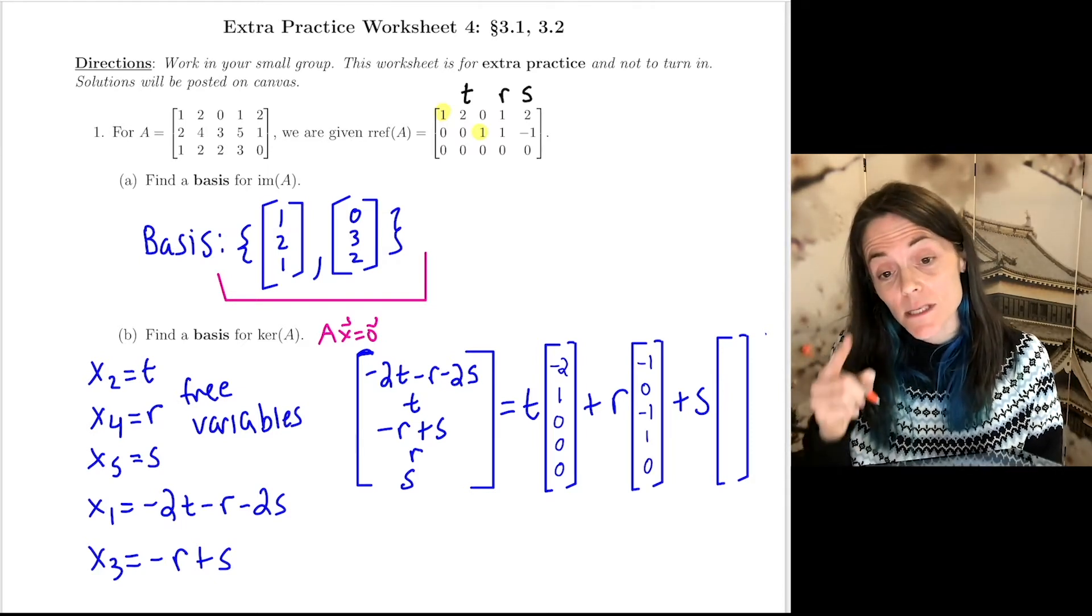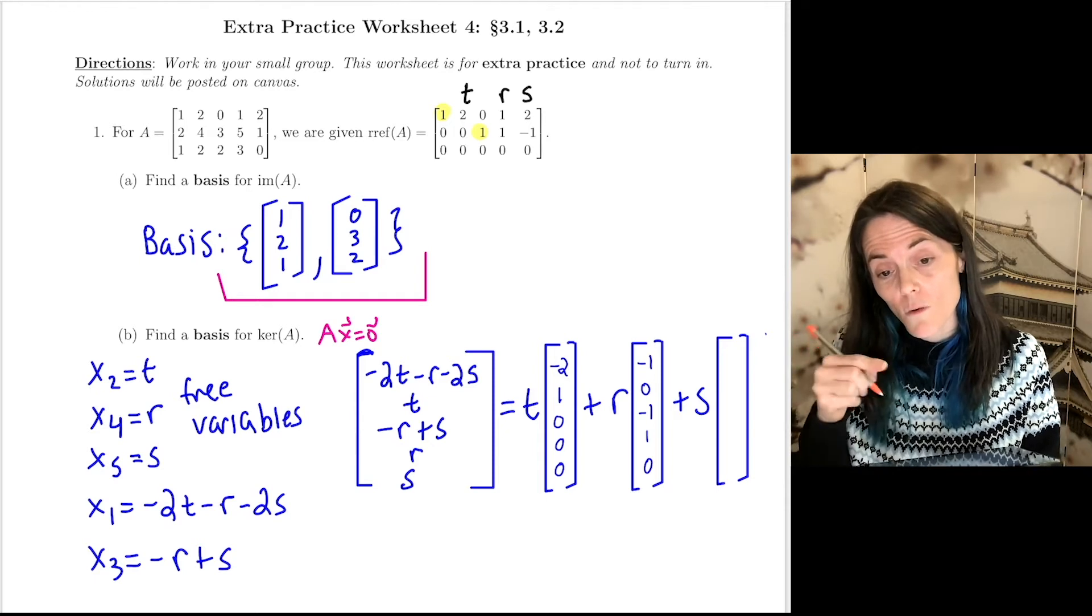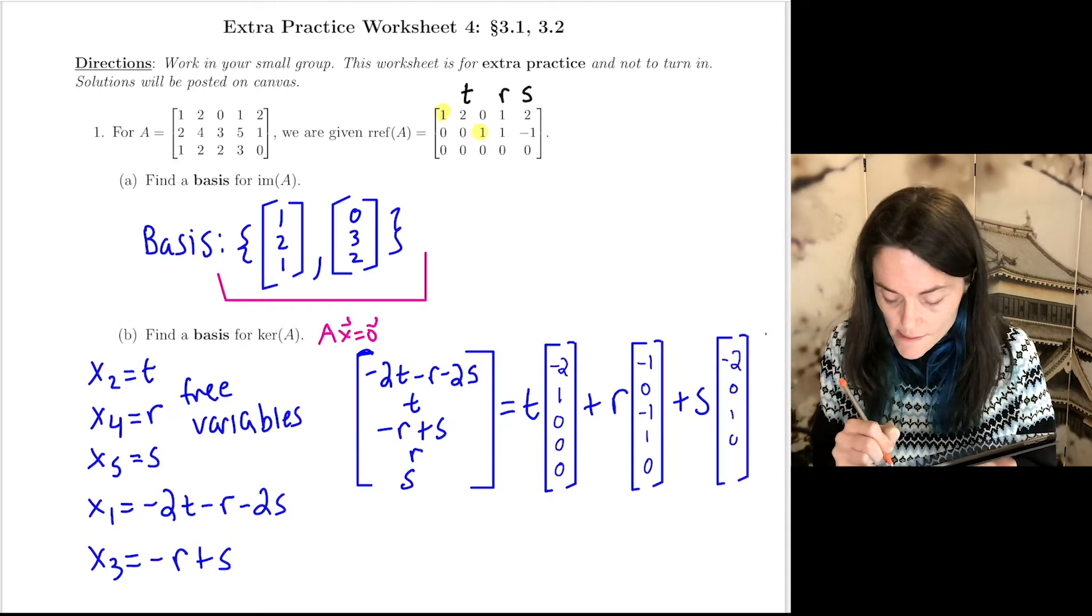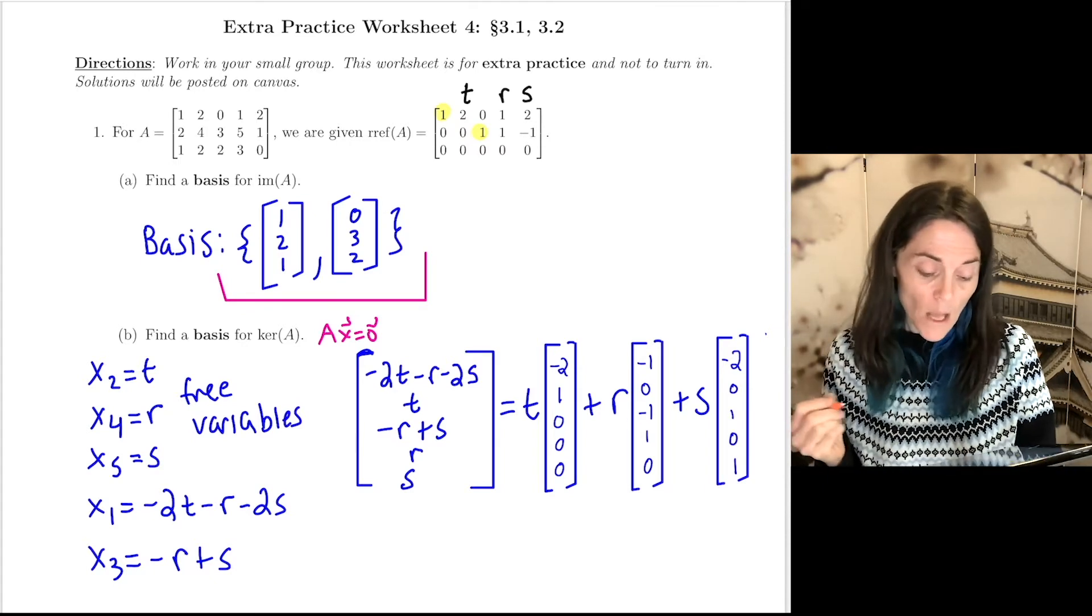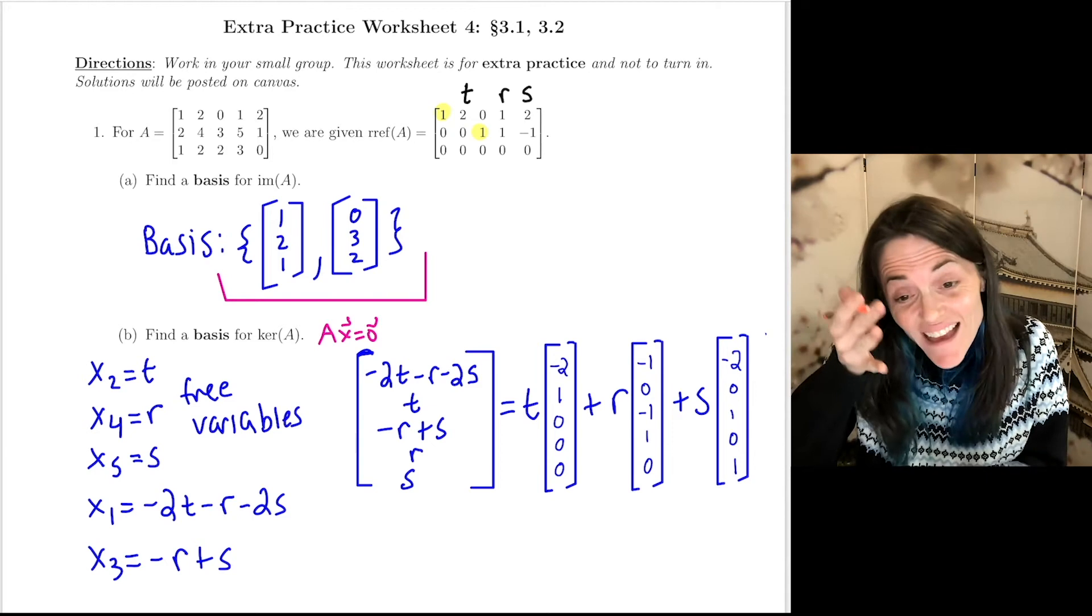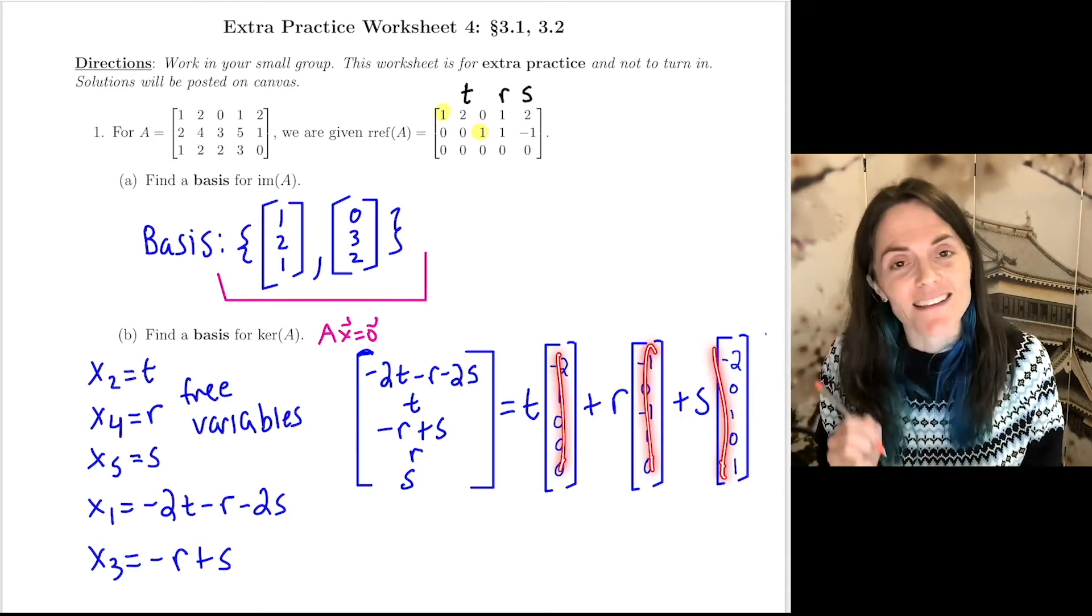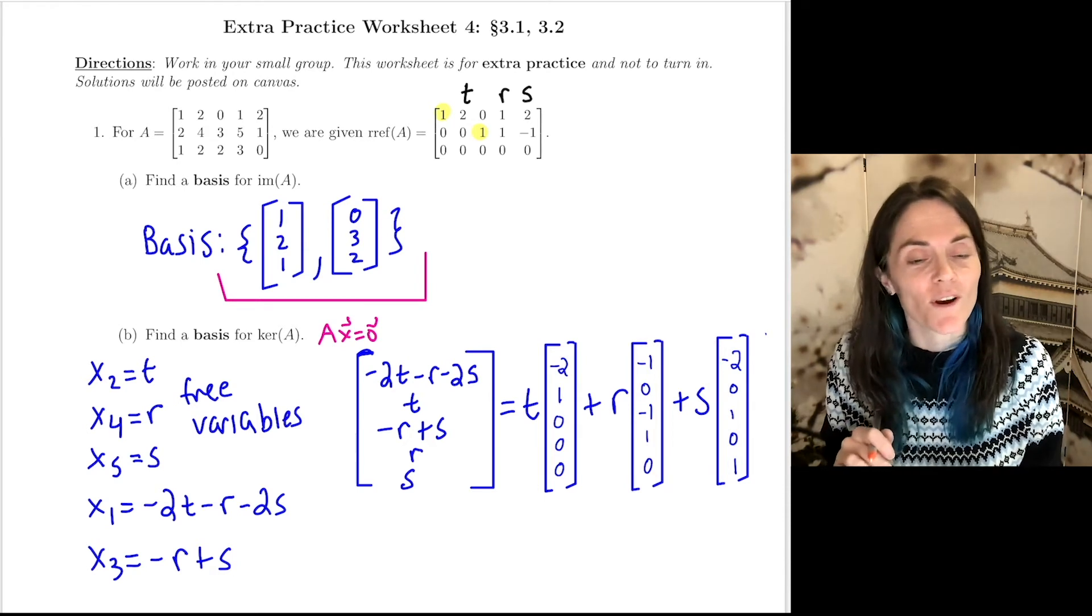And then finally, we have S times minus 2, 0, 1, 0, 1. These three vectors here, here, and here will form a basis for the kernel of A.